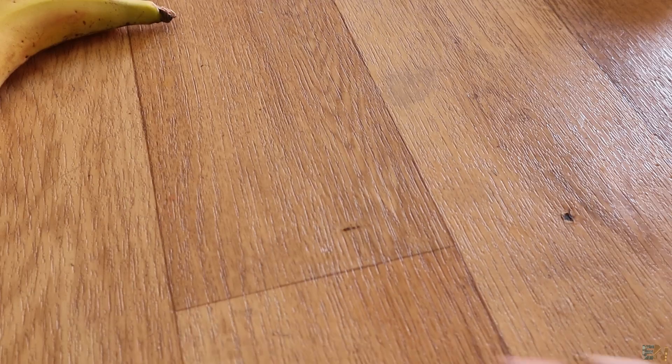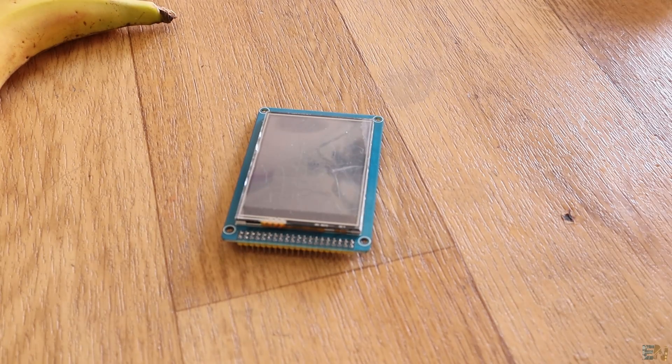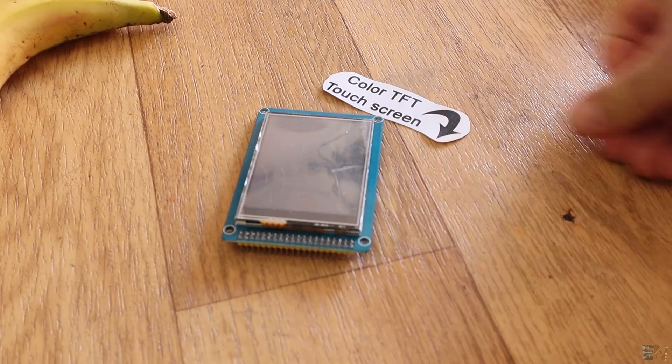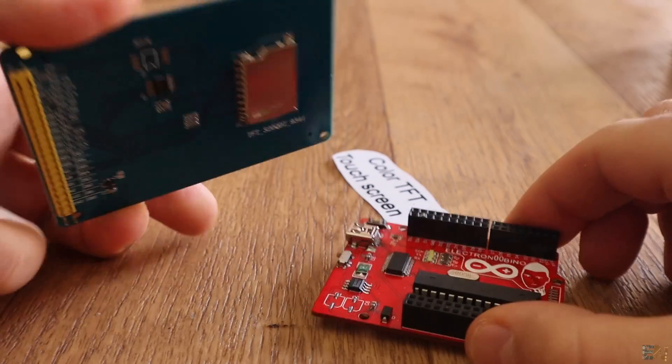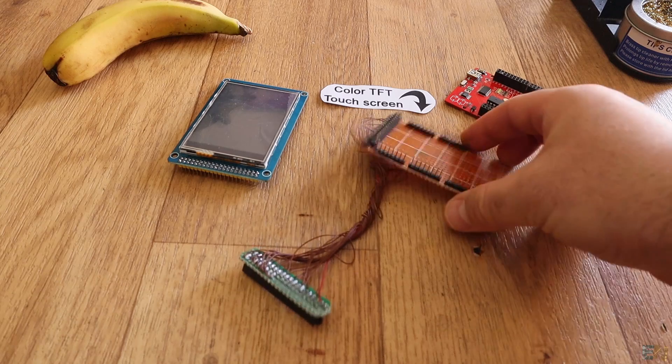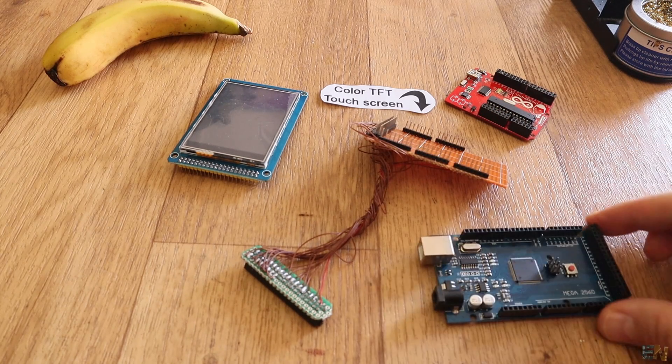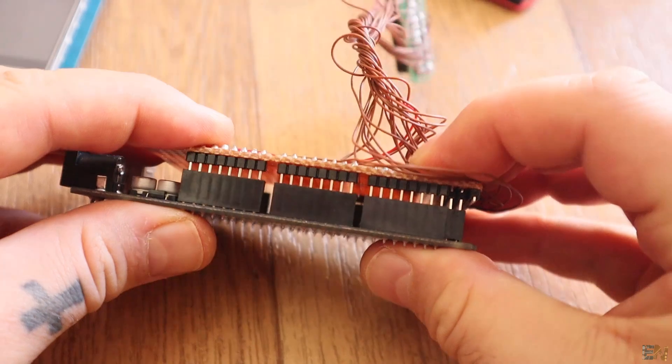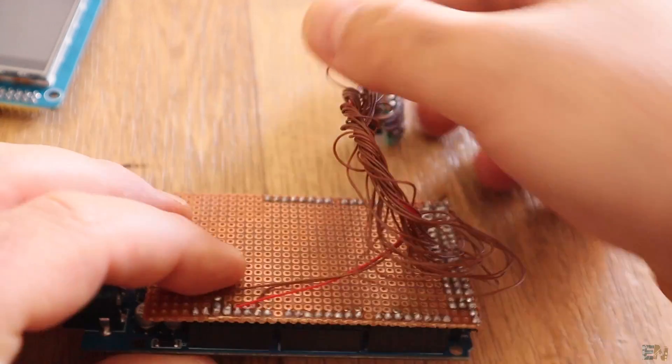Now in the same way, I have this next TFT display that also has a touch screen. It needs a shield in order to be used since as you can see it has a lot of pins. But I don't have that shield so I've tried to make one myself. I couldn't make this display to work and I don't know if it is damaged or if the library is wrong.